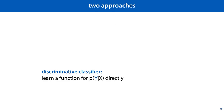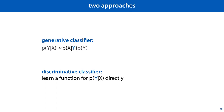We can try to learn this function directly — that is, we learn a function from the instance space x to a probability vector on the classes, and we interpret that function as a conditional probability. This gives us what is called a discriminative classifier. We'll look at that in the next video. In this video, we'll look at an alternative approach called a generative classifier. Here, we don't learn the probability of the class given the instance directly, but we instead turn it around using Bayes' theorem, and we learn the probability of the data given the class together with a prior probability on the class.